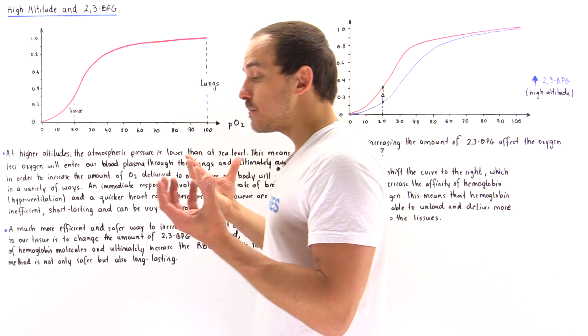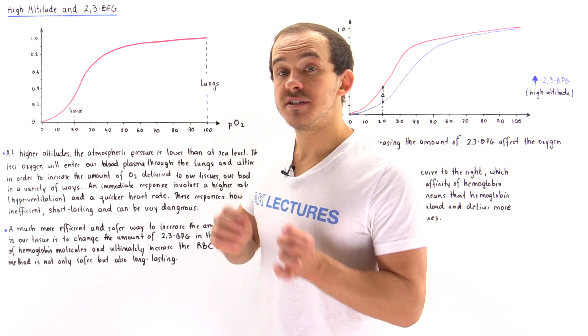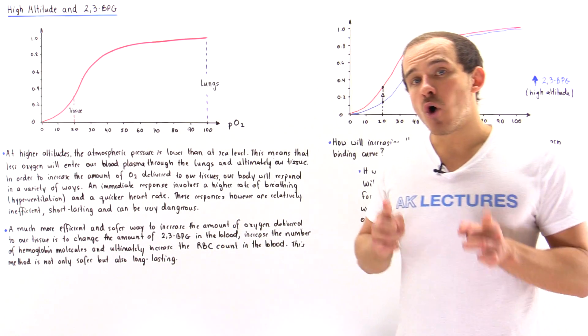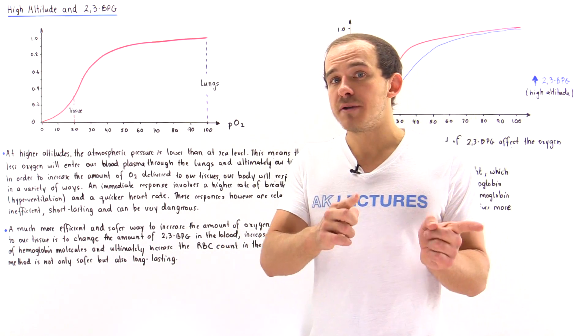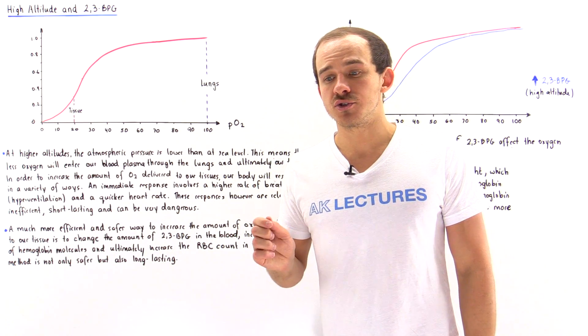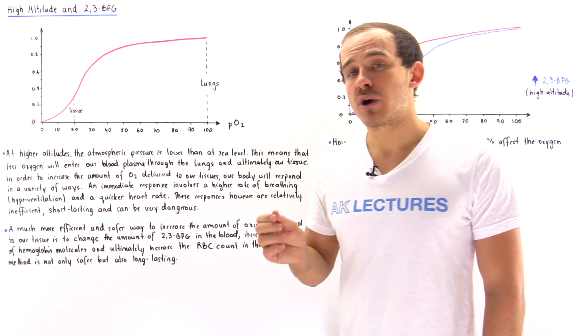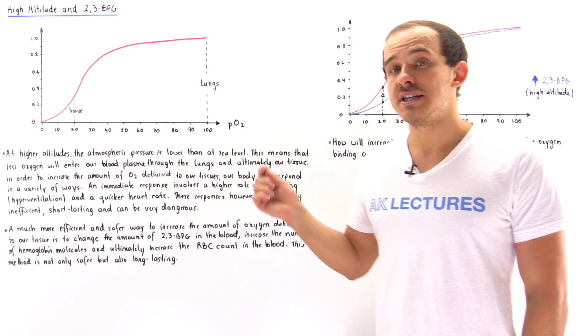If the air becomes less dense, then the total pressure in the atmosphere decreases. If we multiply 0.21 by a smaller total pressure, that gives us a smaller partial pressure of oxygen. So if we increase the altitude, the partial pressure of oxygen in the atmosphere decreases.